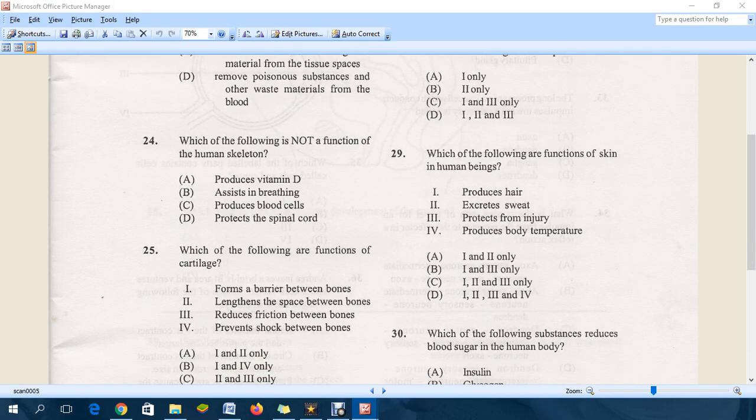Moving down to question 24: which of the following is NOT a function of the human skeleton? We have produce vitamin D, assist in breathing, produce blood cells, and protect the spinal cord. A is the correct answer - produce vitamin D. As for the other three, B, C, and D, the human skeletal system of course aids in all of those.